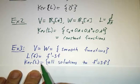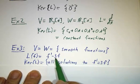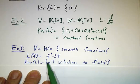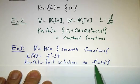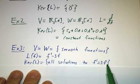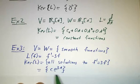And its kernel is all functions whose derivatives minus 3 times the function is zero. In other words, it's all solutions to the differential equation f' equals 3f. And that happens to be all multiples of the function e to the 3t. There are a lot of problems in differential equations that can be rephrased as finding the kernel of such and such operator.